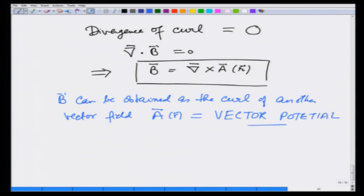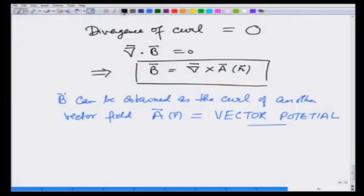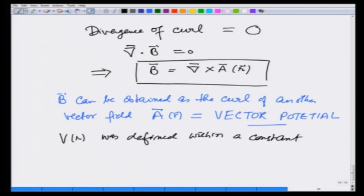So, in the case of electric field we had a scalar potential V(r), which is also interpreted as the work done. In the case of magnetic field it is the vector potential. Now, just like V(r) was defined within a constant, that means I could have V(r) or V(r) plus C. I could add a constant to V(r); it still gave me the same electric field or the same physical quantity.